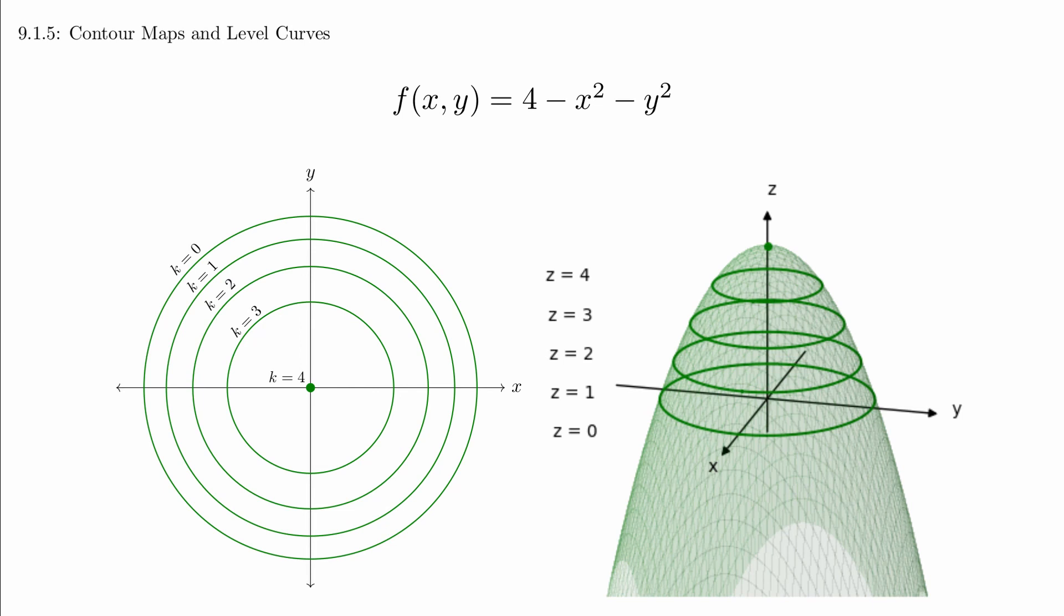If the contour lines are close together, the graph is steep in that area. If there are very few contour lines, it means it's less steep.